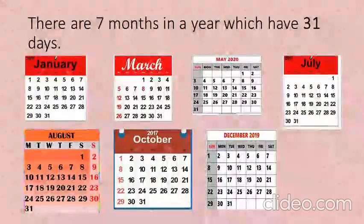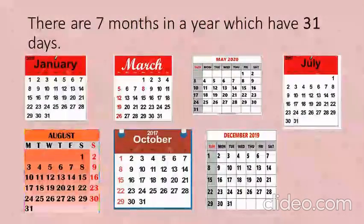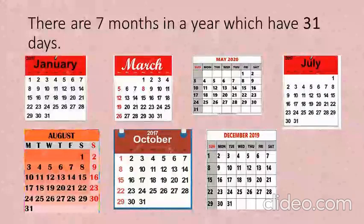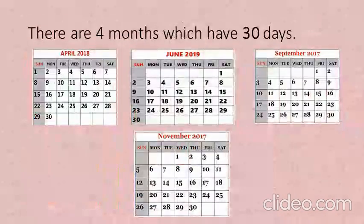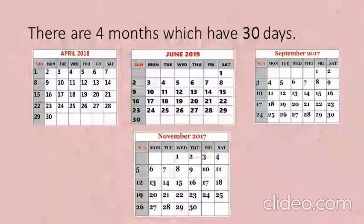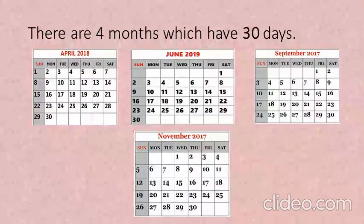There are 7 months in a year which have 31 days. They are January, March, May, July, August, October and December. There are 4 months which have 30 days and they are April, June, September and November.